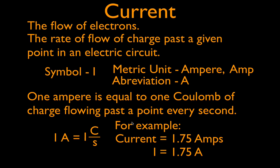This is how we often write or say that. We say the current is equal to 1.75 amps, for example, or we abbreviate it as I equals 1.75 A. We don't say I 1.75 A. We say the current is equal to 1.75 amps.